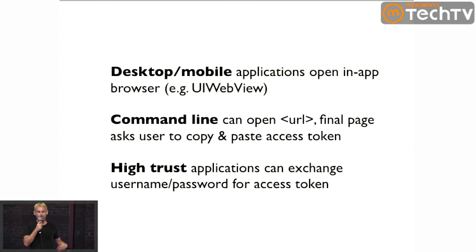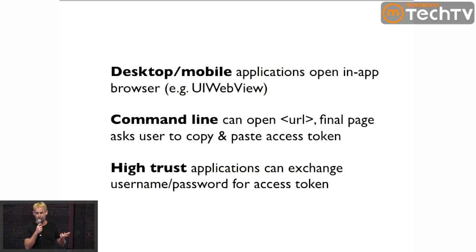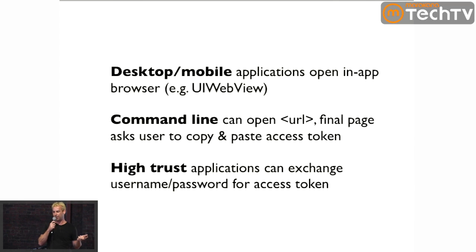Everything so far has been examples for web applications. If you're writing a desktop or mobile application, you can just embed the web UI to do the authorization flow and catch the redirect at the end — there are lots of examples for iOS and Windows. For command line tools, you can open a browser page and at the very last step it shows the user the access token, which you can copy and paste into a command line argument or configuration file. You can also, as part of the protocol, send username and password and get back an access token — if it's an application you wrote, like an admin script or internal tool, you can do that to simplify the flow and still use access tokens.